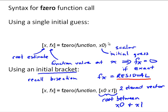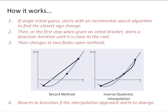So let's talk about how it works. If you have a single initial guess, what fzero does is it starts with what's called an incremental search algorithm. And it's a fairly simple idea where we can just imagine it evaluates the function. It evaluates the function from that initial guess, x0, at several increments and keeps stepping along until it says, oh, okay, right there I have a sign change.